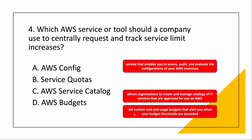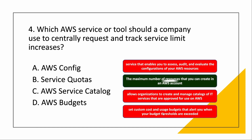AWS Budgets helps you set custom cost and usage budgets so you get an alert when thresholds are exceeded. For example, you can set an alarm so that when you exceed $100 you get notified that your budget is being exceeded. The correct answer is Service Quotas — it gives you a way to centrally request and track service limit increases.